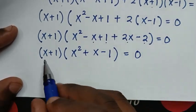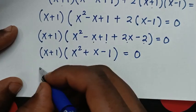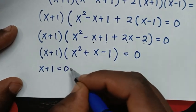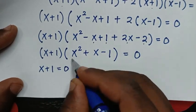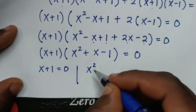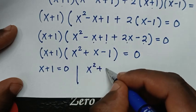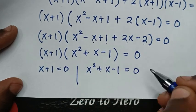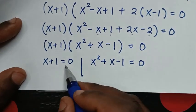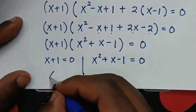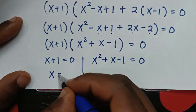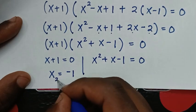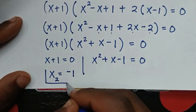From here we have two solutions. The first solution: x + 1 = 0, so x = -1. This is the second value of x. The second solution is the quadratic equation x² + x - 1 = 0.